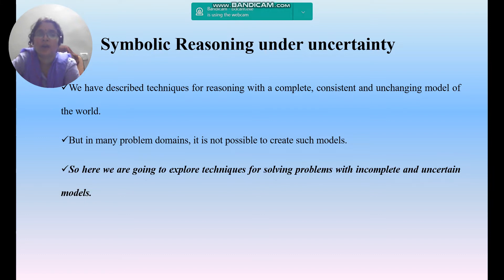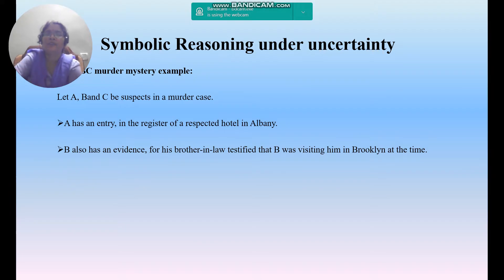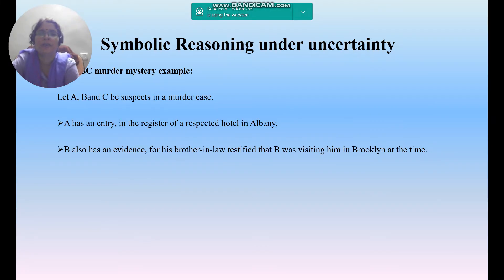So we are going to explore techniques for handling such situations of uncertainty. What comes under symbolic reasoning? Let us see the best example — the ABC murder mystery. In a murder mystery, A, B, and C are the suspected people.